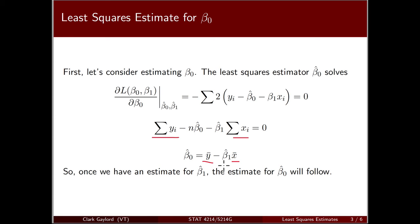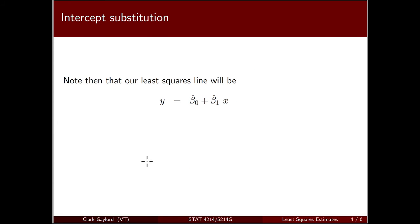So if we have a least squares estimate beta1 hat, we can immediately derive beta0 hat from that. Let's rewrite our least squares line now. We have beta0 hat as a function of beta1 hat, so let's substitute that in.